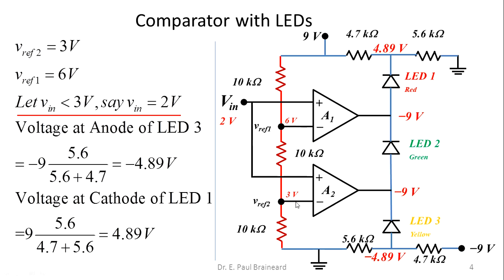At comparator A2, the inverting voltage magnitude (3V) is also greater than the non-inverting input (2V). Therefore, the output of comparator A2 is also −Vcc = −9 volts. Both comparator outputs A1 and A2 are −9 volts.